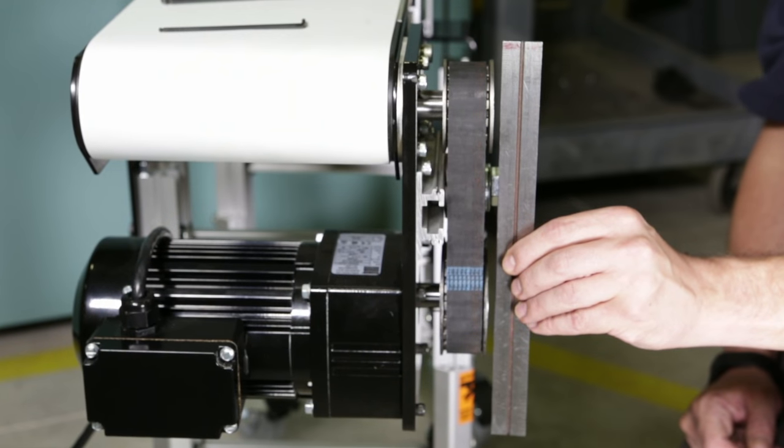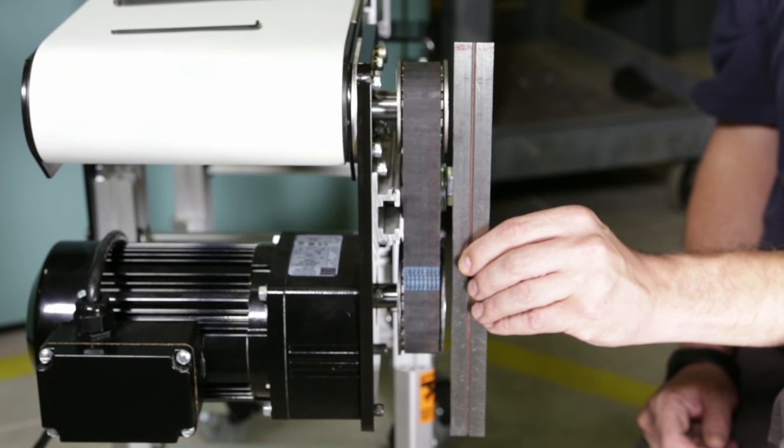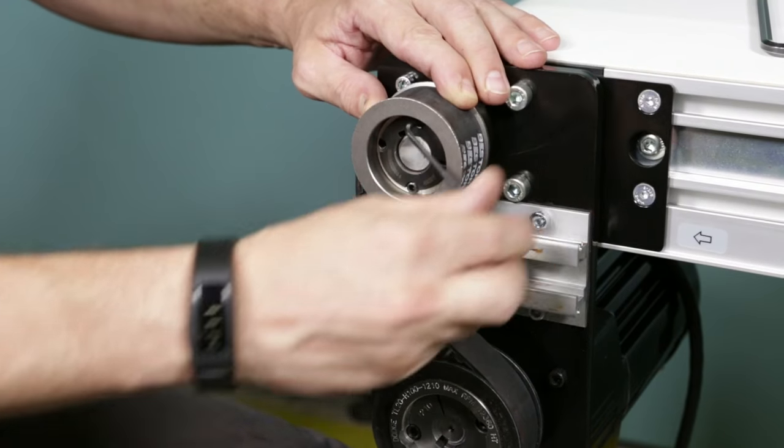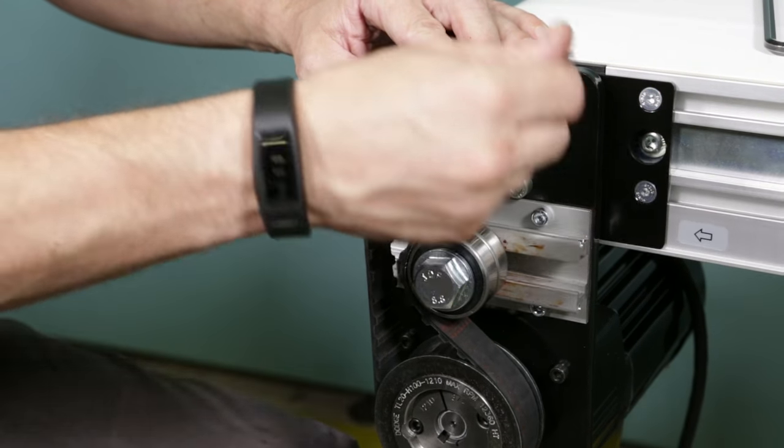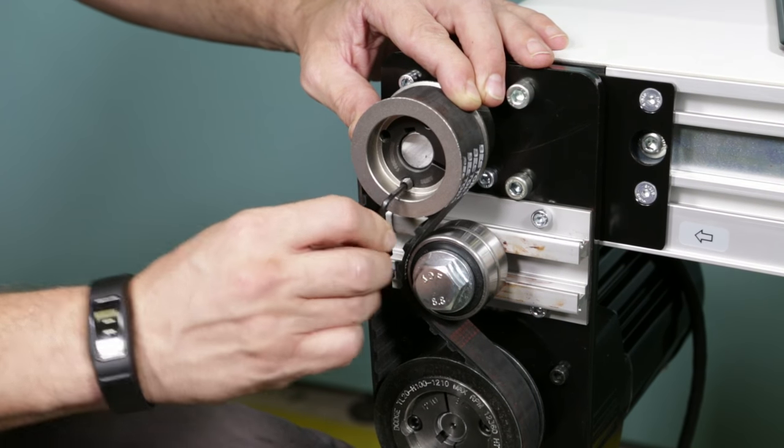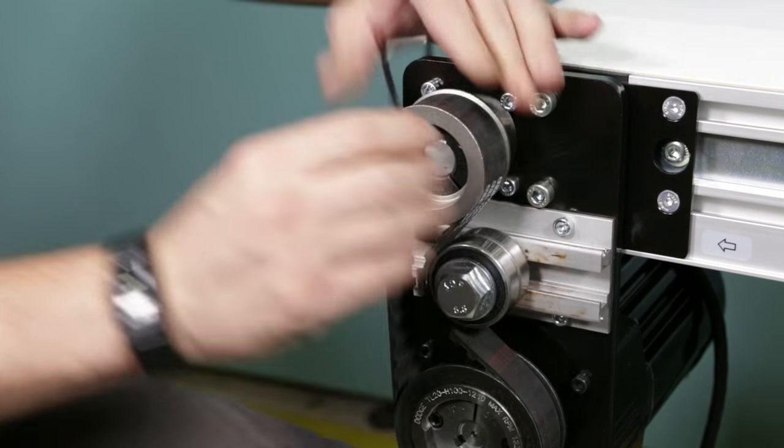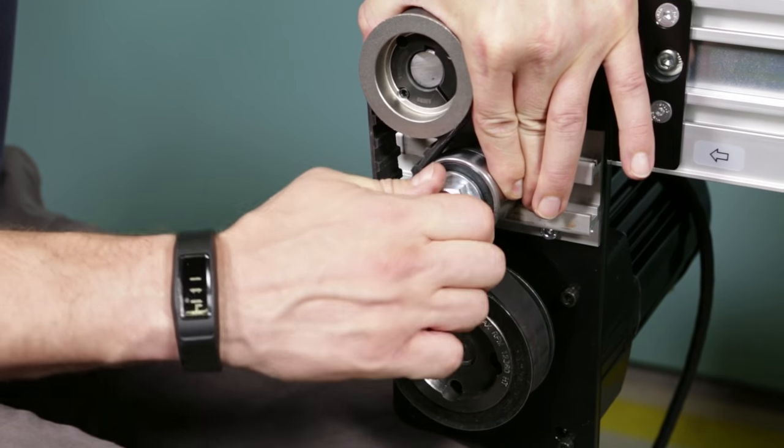Using a straight edge, ensure the driven pulley is aligned with the drive pulley. Making sure the driven pulley stays aligned, tighten the driven pulley taper lock screws. Finish tightening the tensioner screw and check that the timing belt is tensioned.